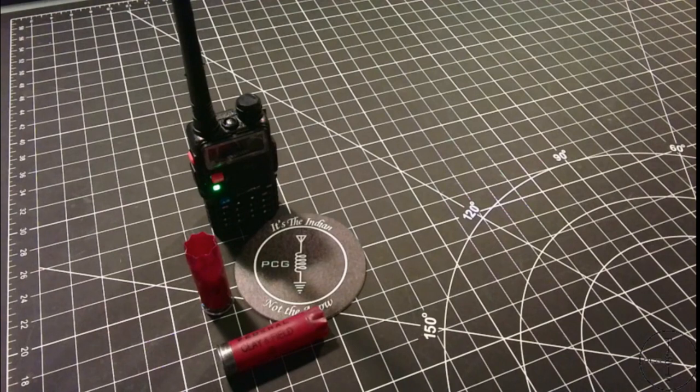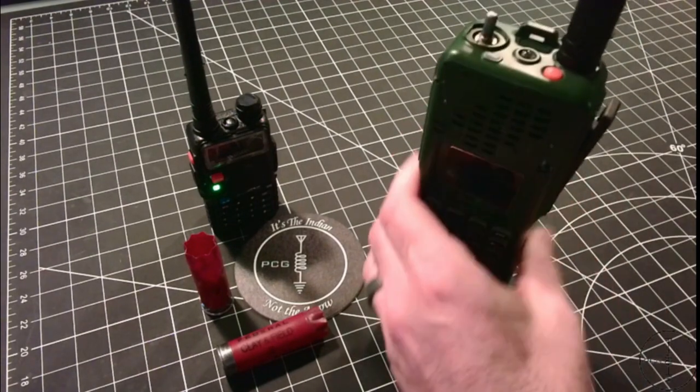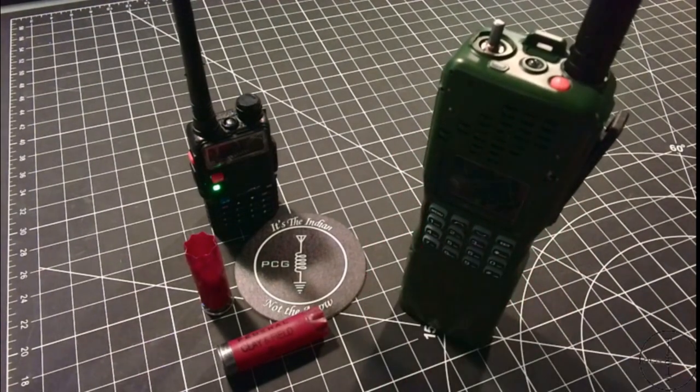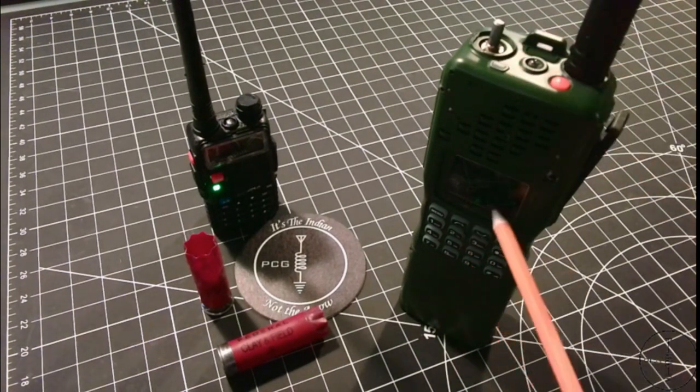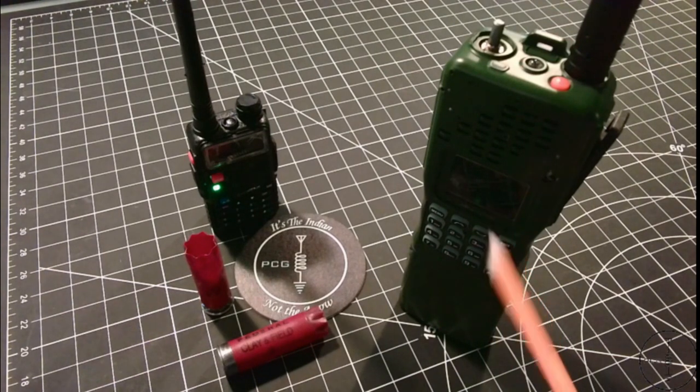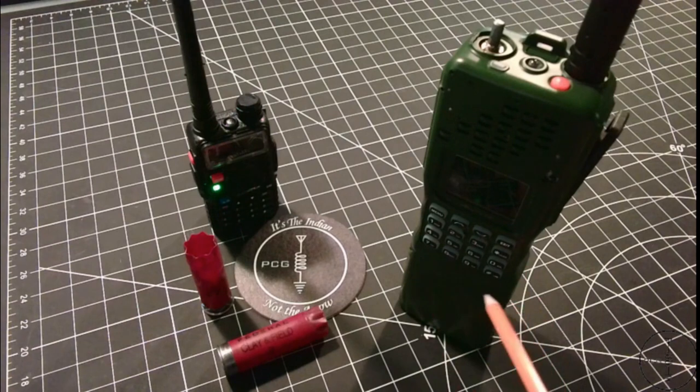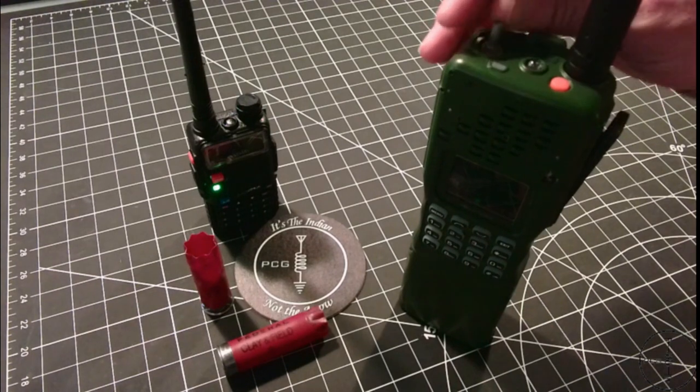Next is the AR-152. This one did pass, and it still powers up. We did lose the volume knob. The display, like the UV-5R, is no longer legible. It no longer functions. But all the keypad functionality still appears to work, and it still has audio. I'll turn it on to show you that it works. And I'm able to toggle back and forth between the weather channel and my 2-meter repeater.